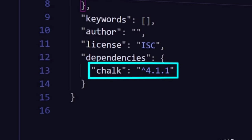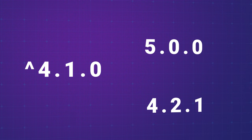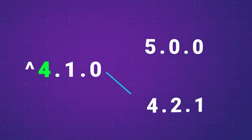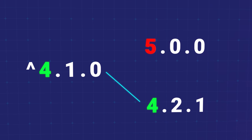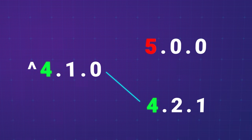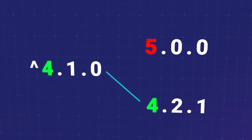What's that caret symbol in front of the version number? This and a few other symbols are what npm uses to limit what versions it'll automatically update to. The caret symbol will update the package to the latest minor and patch version for the currently installed major version. This is the default symbol that npm will prefix the version number with when it installs packages.